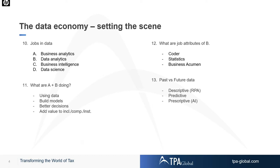The jobs in data include business analyst, data analyst, business intelligence, and data science. These roles use data to build business models and enhance better decision-making, which then adds value to corporates, individuals, or government institutions. The job attributes of data analytics could be a coder, someone with a statistical background, or a person with a business background — a lot of data analysts actually come from a business background.